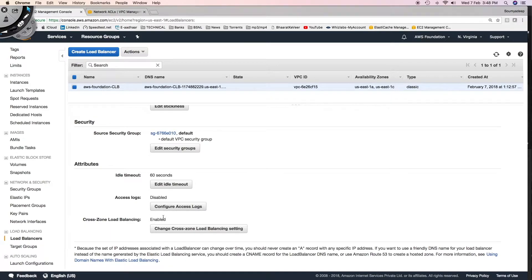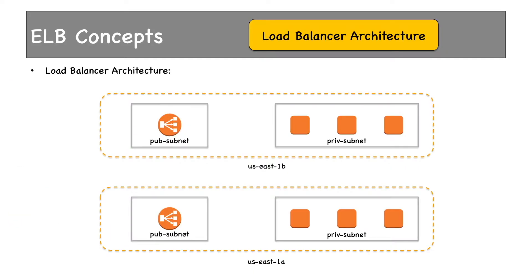Finally, we have cross-zone load balancing. Before going into the scenarios, I want you to take notice of this load balancer architecture again. When you add public subnets for load balancers, it creates load balancer nodes in those public subnets. In our case we created two public subnets, public 1a and public 1c, and we saw using nslookup that there were two nodes — those two nodes were in the public subnets attached to the load balancer.